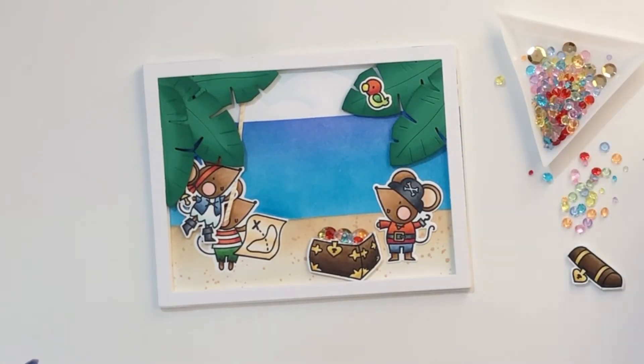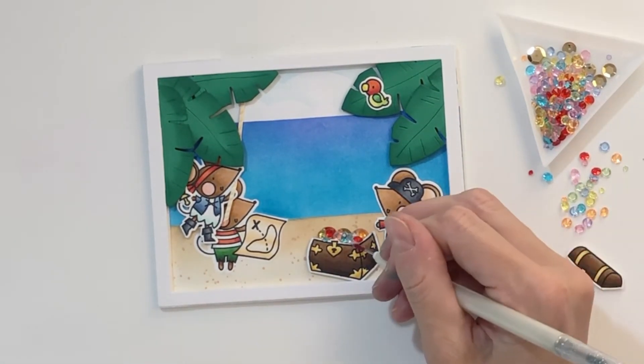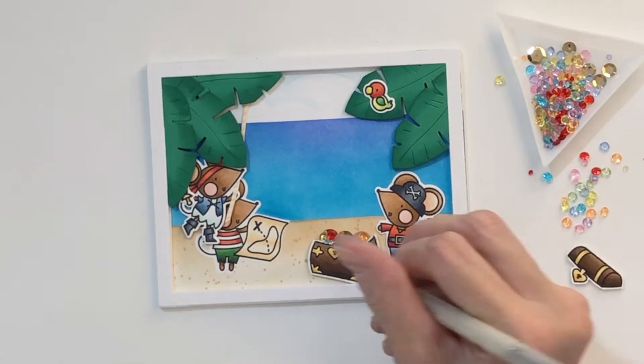So after I get some of the bigger ones in place, I'll then glue some of the smaller ones right along the very edge of the treasure chest just so it looks like that treasure chest is really full. In fact, practically spilling over.